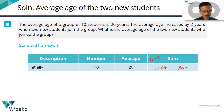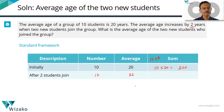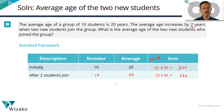Two new students join, so the total count becomes 12. The average increases by two years, so the new average is going to be equal to 22 years. The new sum for all 12 students taken together is 12 into 22, which is equal to 264.